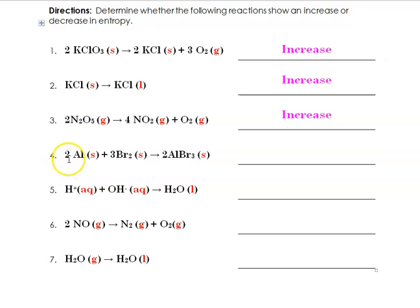The next one, we have 2 moles of aluminum in the solid state plus 3 moles of bromine in the solid state going to 2 moles of aluminum bromide. Now here, we have 5 moles of reactants going to 2 moles of product, and this is a combination reaction. So this would represent a decrease in the randomness, because you had 5 things going to 2.